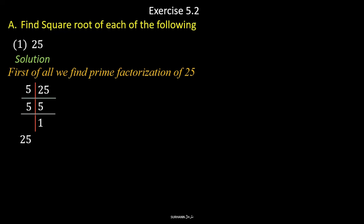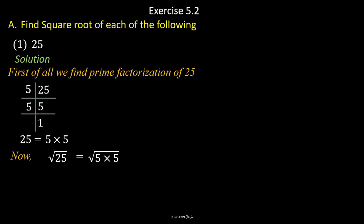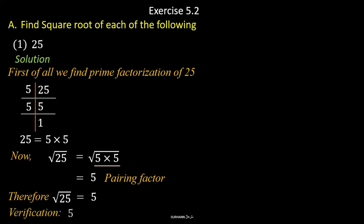We already know how to find prime factors. The prime factors of 25 are 5 and 5. Now we will make a pair of prime factors and pick one number from each pair. Here there is only one pair of 5, so we pick one number from it, which is 5. So the square root of 25 is 5. You can verify it as well.